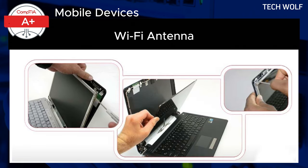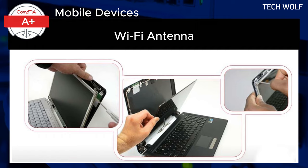The Wi-Fi antenna is delicately routed around the display to optimize signal strength. Misaligning these cables can lead to weak or unstable wireless connectivity, so care must be taken to avoid crimping or tension. The antenna connectors, typically snap-on, should be firmly attached to the wireless card without forcing them.